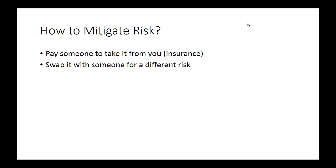So how do you mitigate this price risk? Generally there are two ways. The first is to pay somebody to take it from you — like life insurance, where we pay someone else to bear the risk of dying early. However, it's very hard to convince people to assume your price risk by paying them, because it's almost impossible to predict. Insurance companies are happy to sell life insurance because there are mountains of statistics to forecast mortality. But when it comes to price risk, there are no good models, no good statistics, no good data sets to predict when grain prices will move. So there are almost no entities willing to take your price risk for payment. The other way to mitigate risk is by swapping it with somebody for a different risk.